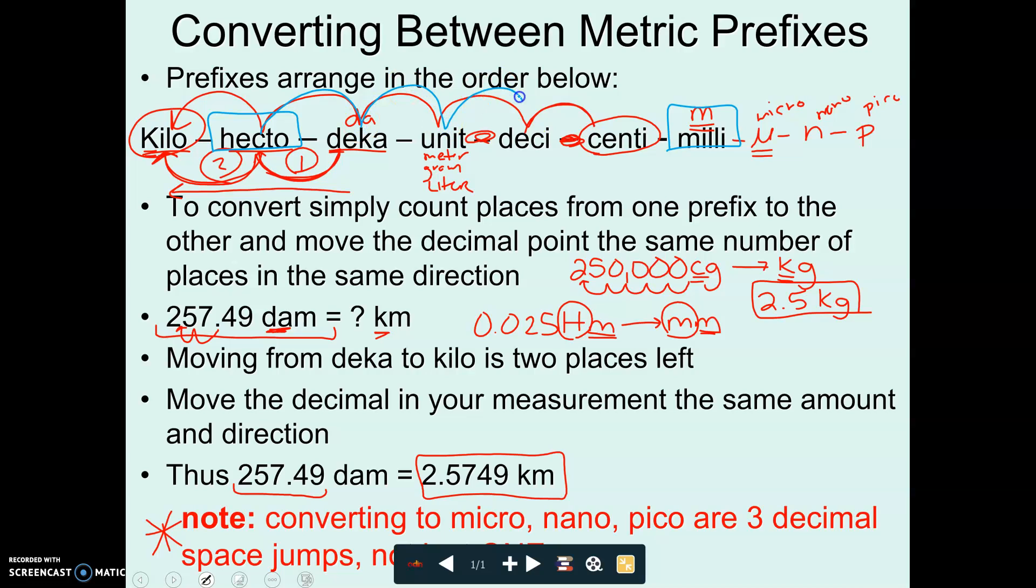I need to move my decimal five places to the right from where it currently is. That's going to be one, two, three. And I'm going to need to add two zeros. My answer here is going to end up being 2500 millimeters. Because I moved my decimal from here, 0.025123, and then I add two zeros for this other two. And this is millimeters.